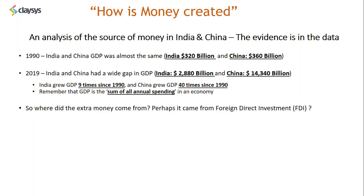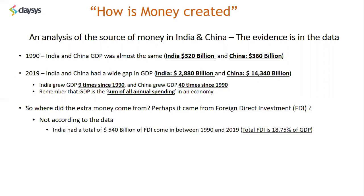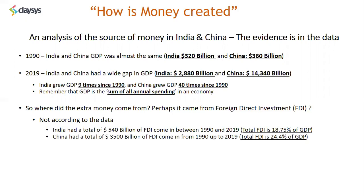So where did the extra money come from to support this level of spending? Perhaps it came from foreign direct investment, or external investors investing into the economy. But this is not the case when you look at the data. India had a total of 540 billion dollars coming into the country between 1990 and 2019 as far as foreign direct investment is concerned.